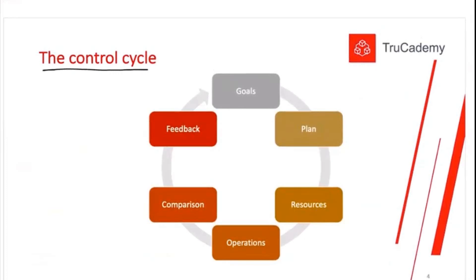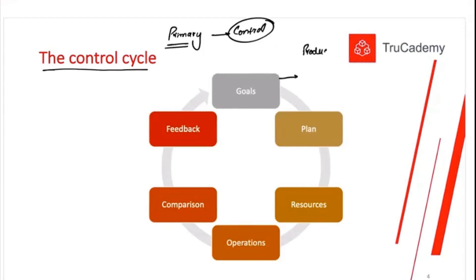Let's talk about the control cycle. This is one of the primary activities of any manager — a key performance requirement. The first job of a manager is to set targets. For example, a production manager performing a control cycle for a quarter would first set a target: how many units to produce. For instance, in a quarter we want to produce 10,000 units — that is the target.